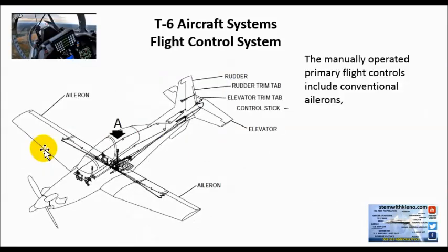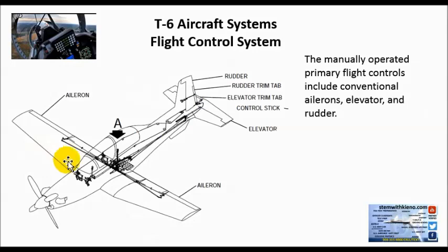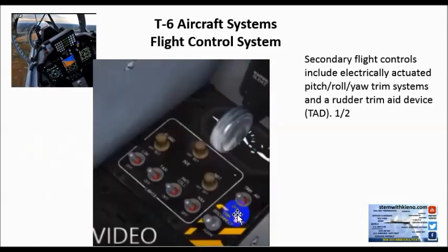The manually operated primary flight controls include conventional ailerons, elevator, and rudder. Secondary flight controls include electrically actuated pitch, roll, and yaw trim systems, and a rudder trim aid device.